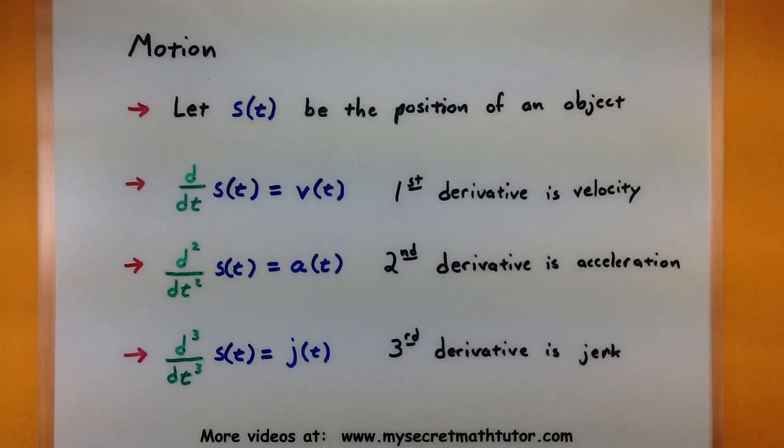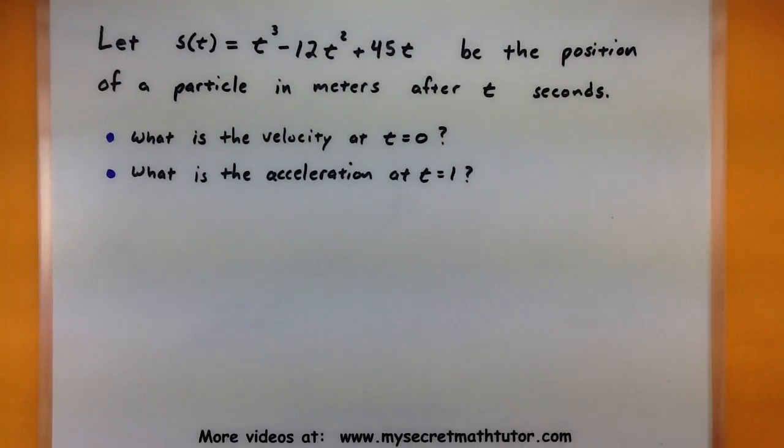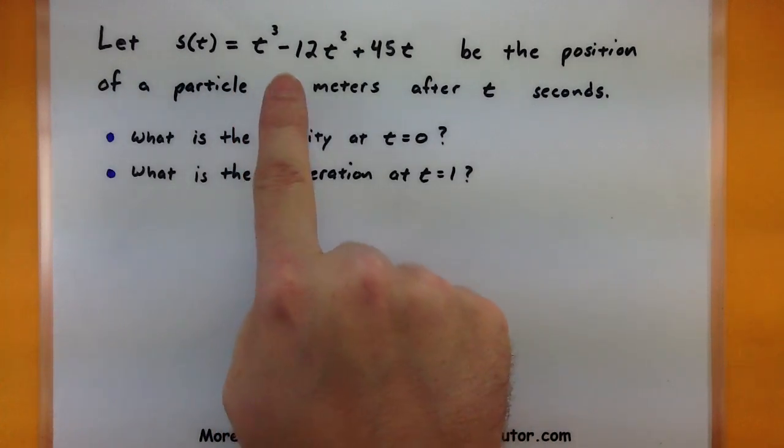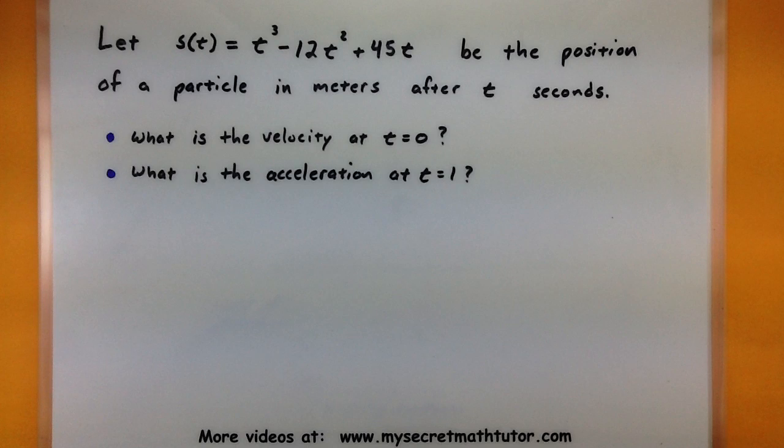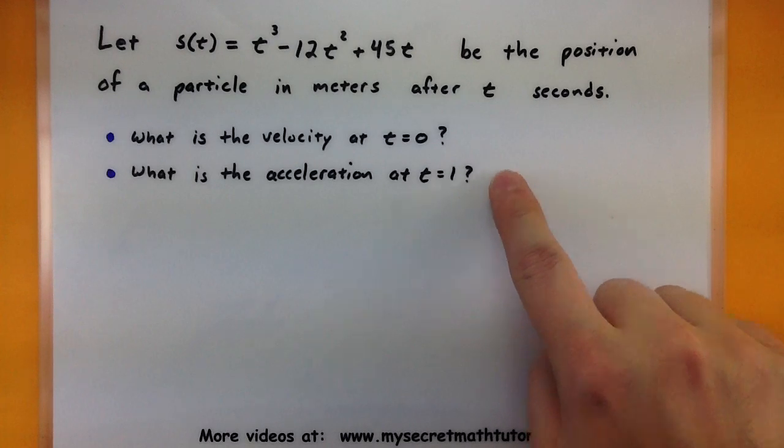Alright, let's go ahead and move on to the example. For this example I have a position function, s(t) = t³ - 12t² + 45t, and it represents the position of a particle in meters after t seconds. So we want to answer just a few questions about it.